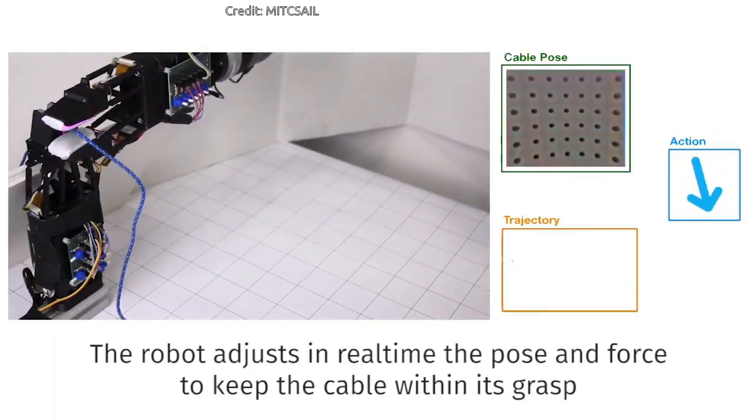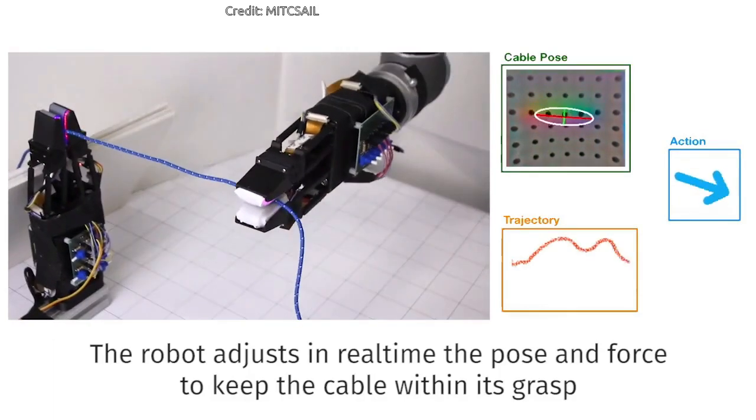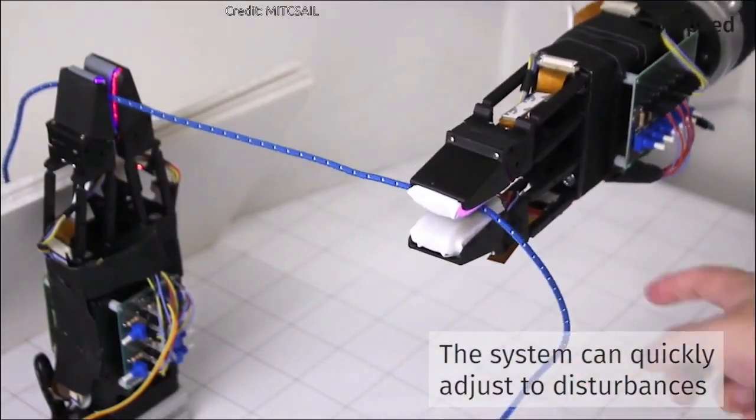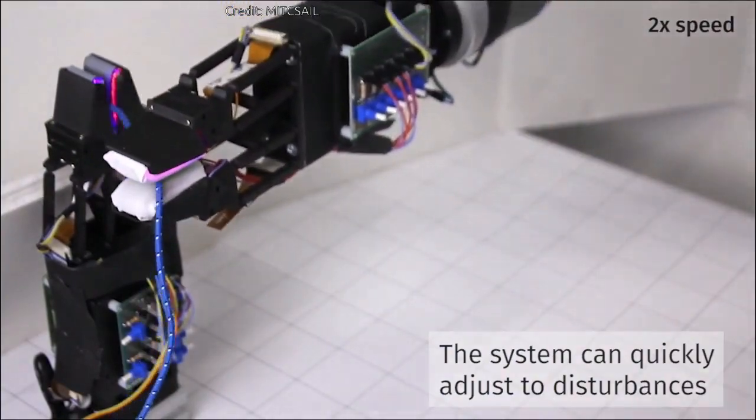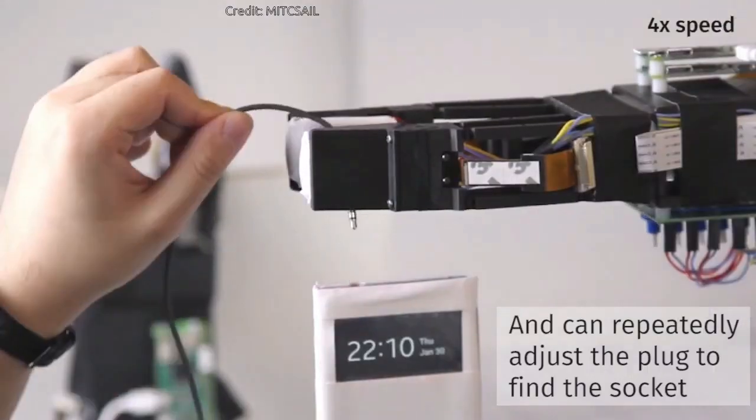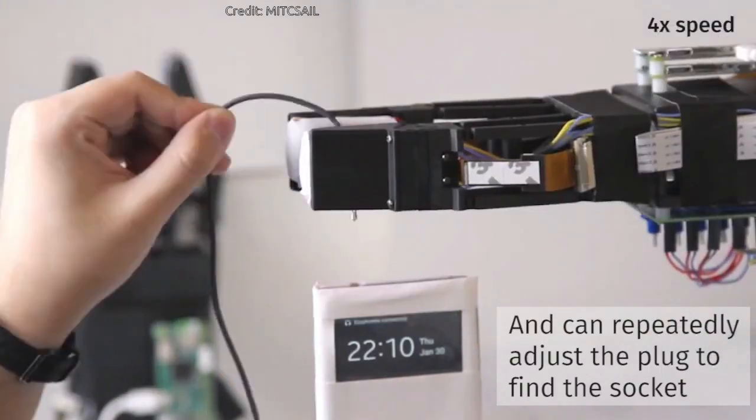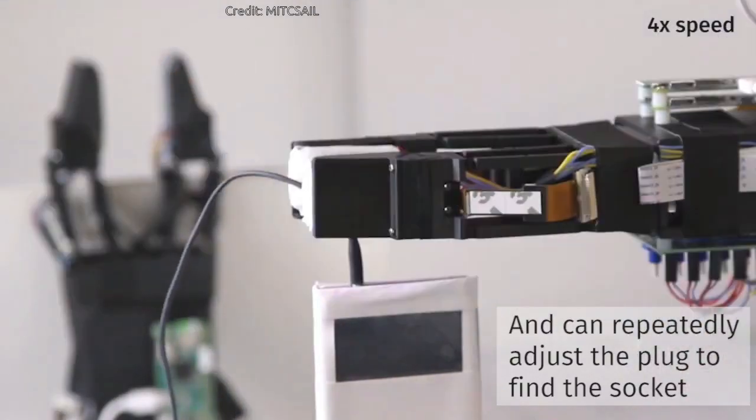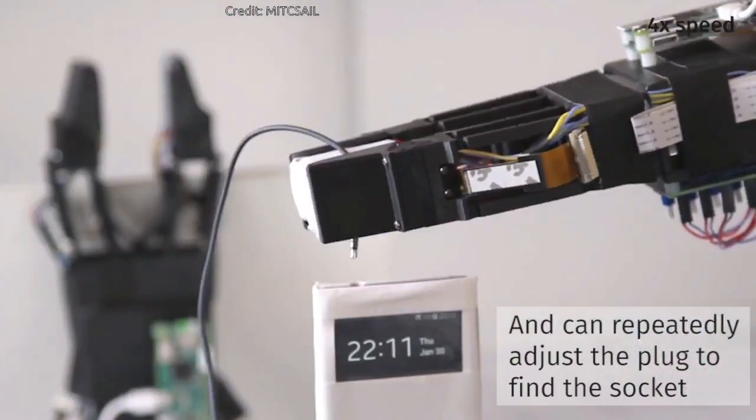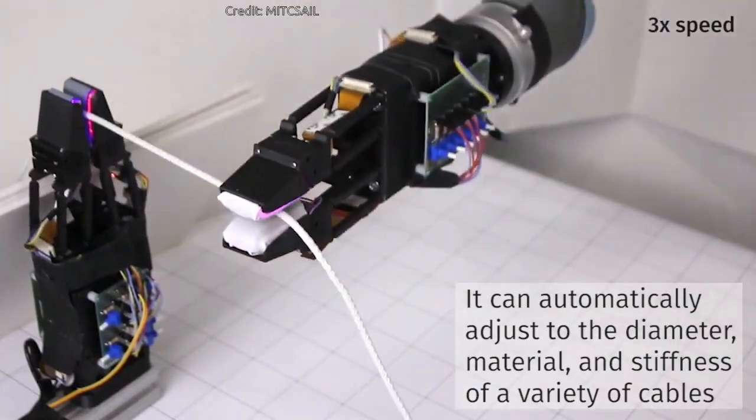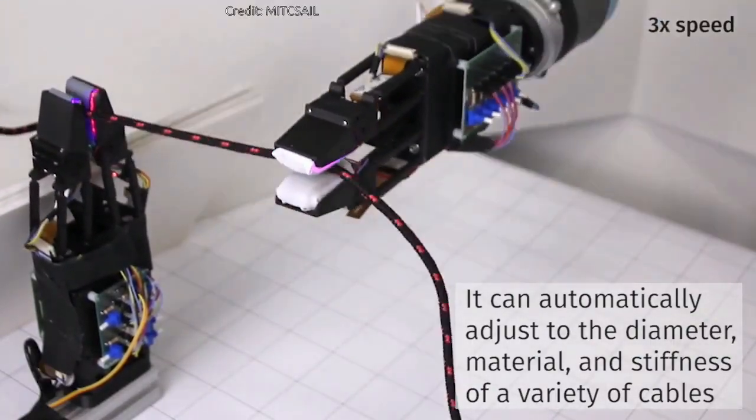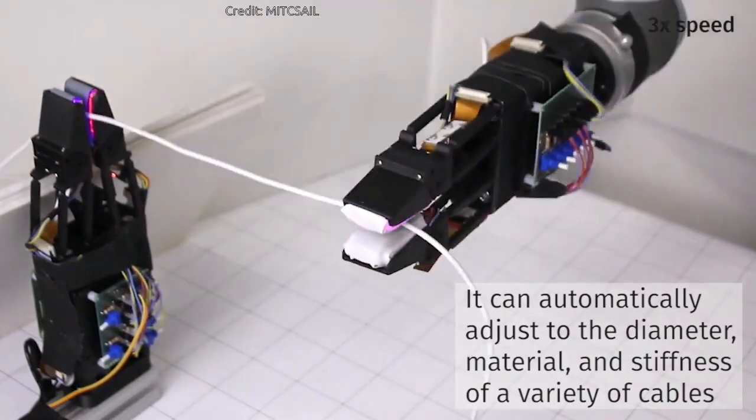When mounted on the arm, the gripper could reliably follow a USB cable starting from a random grasp position. Then, in combination with a second gripper, the robot can move the cable hand over hand, as a human would, in order to find the end of the cable. It could also adapt to cables of different materials and thicknesses.